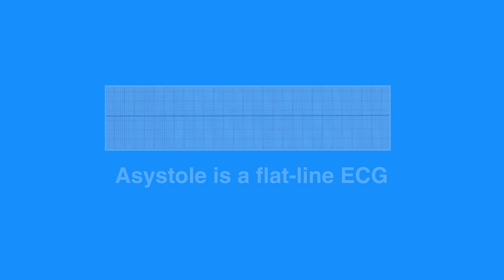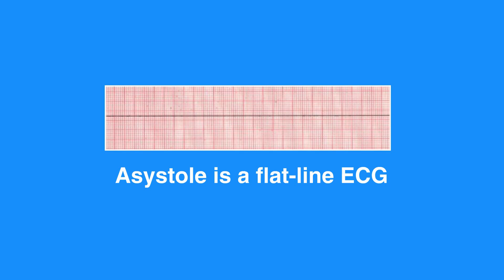Asystole is a flatline ECG. There may be subtle movement away from baseline, which is considered drifting flatline, but there is no perceptible cardiac electrical activity.